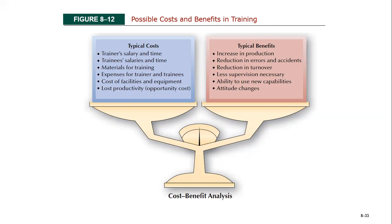The last but not the least cost is lost productivity. HR department staff, trainees, and the trainer himself are all here learning — they are not working at the moment. Therefore everything has its own cost, and all of these are referred to as opportunity cost.